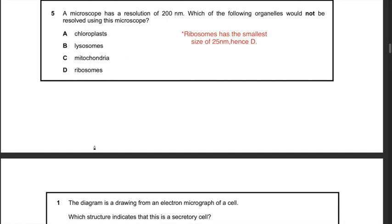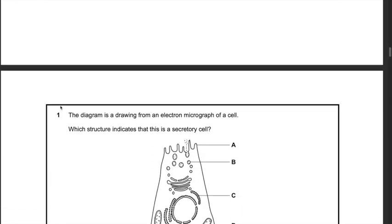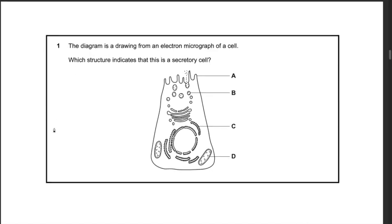Question 7: a microscope has a resolution of 200 nanometers. Which organelle would not be resolved? Looking at A, B, C, and D, it would be ribosomes — ribosomes have the smallest size at 25 nanometers. Therefore the answer is D. Next question: which structure indicates that a cell is a secretory cell? That structure is the vesicle. Only answer B represents a vesicle, and the presence of vesicles indicates a secretory cell. The answer is B.